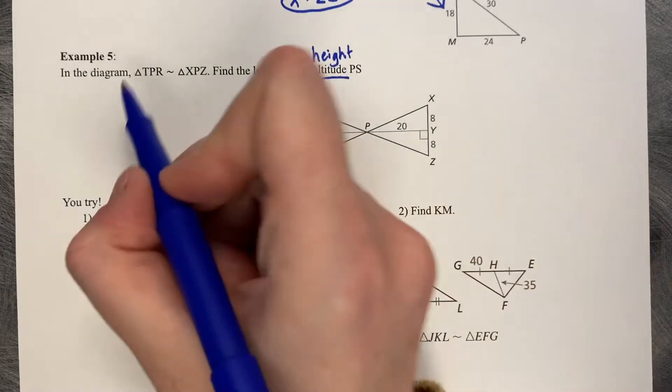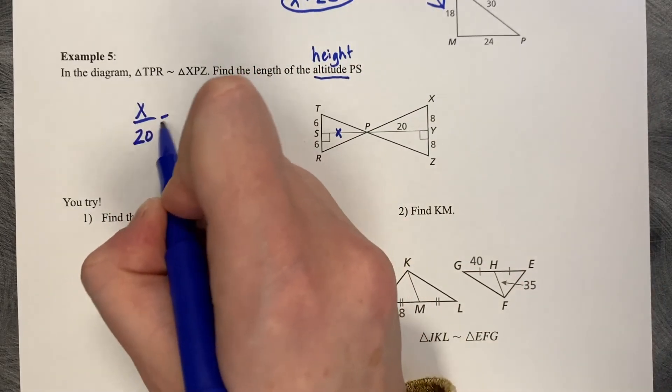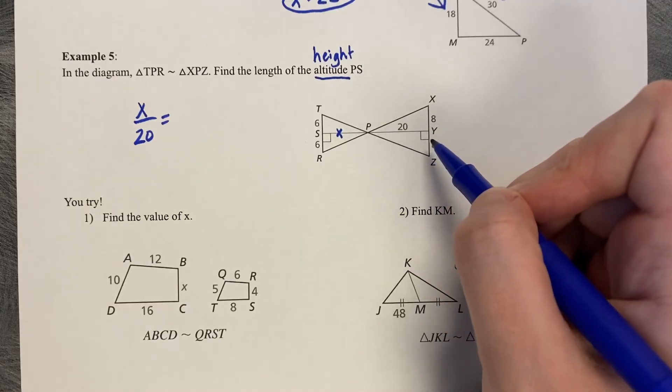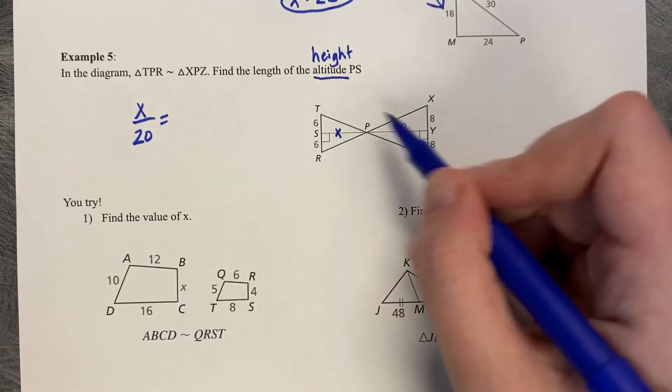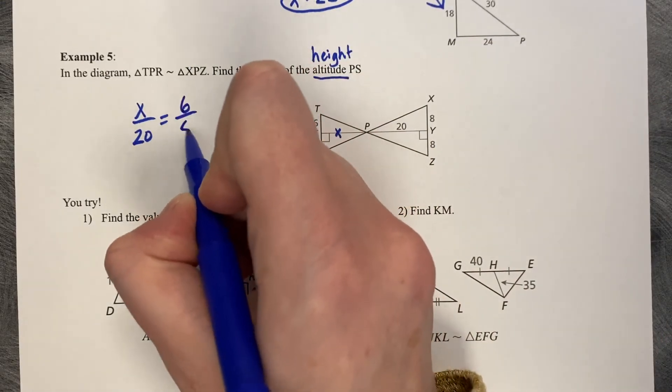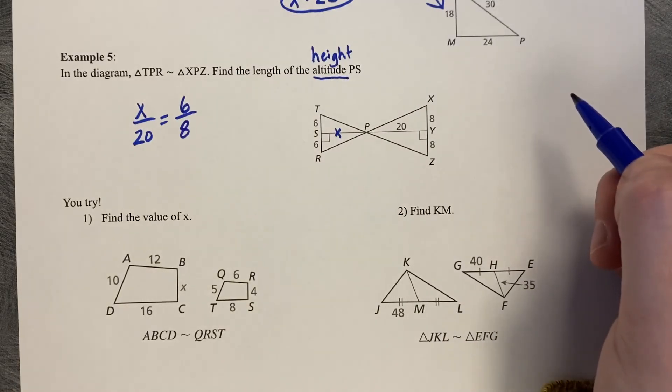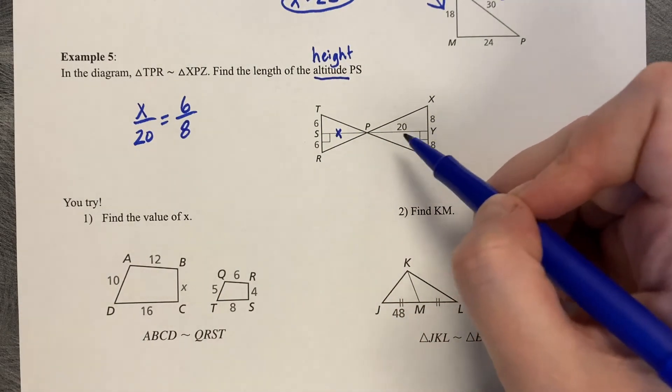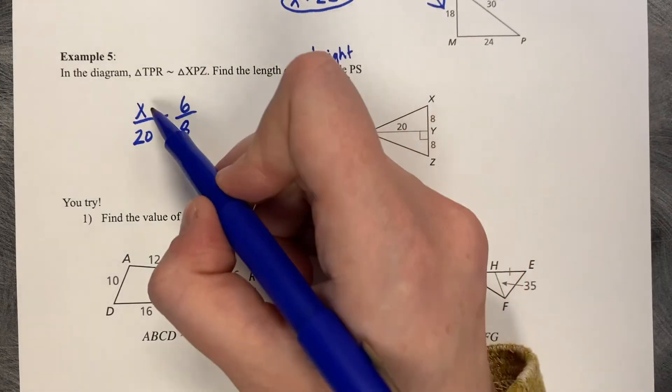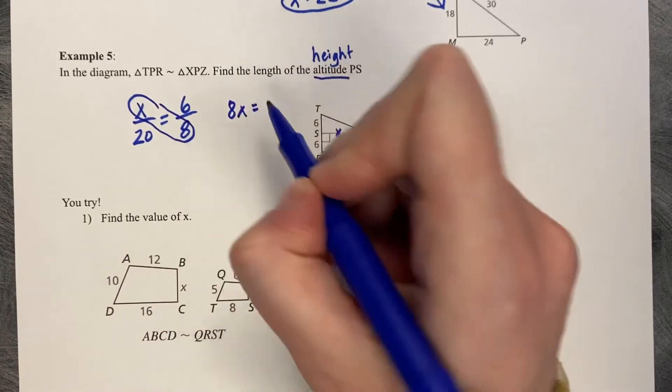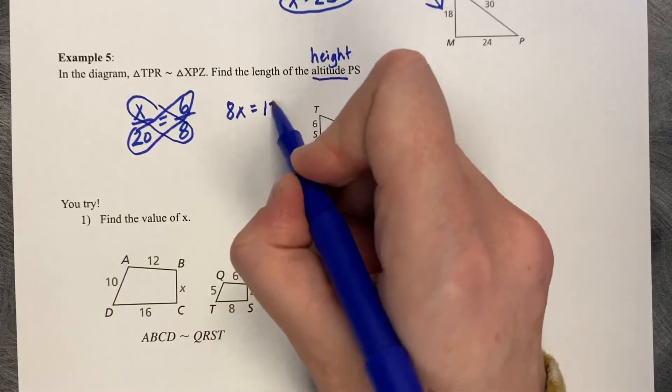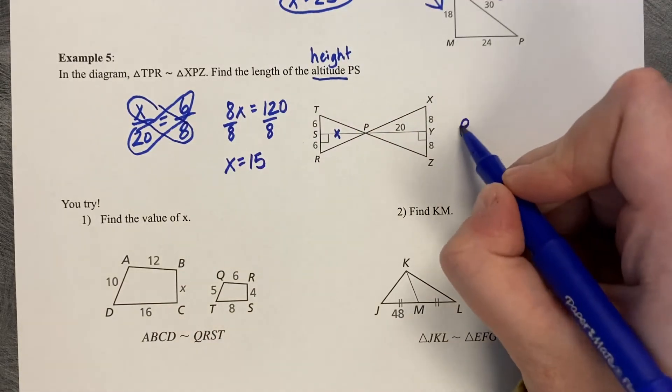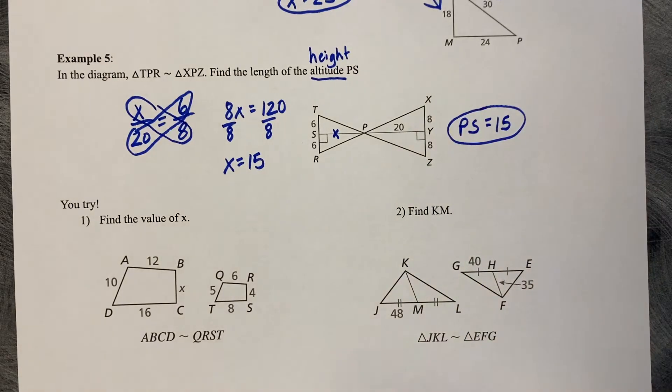You get to choose in this case. Always start with your unknown. X corresponds to 20. And then we can say the 6 is to 8, or 12 is to 16, whichever you want to do is fine. But X is to 20, and 6 is to 8 is what I think I'm going to do. You could go the other direction as well. You could set this up as saying X is to 6 as 20 is to 8. You have several different ways to set it up, and you'll get the same answer. So X times 8 is 8X. 20 times 6 is 120. Divide by 8, and X equals 15. So PS equals 15.